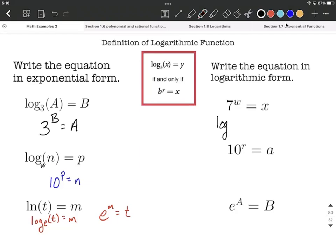For logarithmic form, we have to have a log. First, I'm going to identify the base. In the first one, it's going to be 7 as our base, so it goes as a subscript. Because that was 7 to the w power, it's not going to look like 7 to the w power in logarithmic format. So x goes inside the logarithmic function, w to the other side.